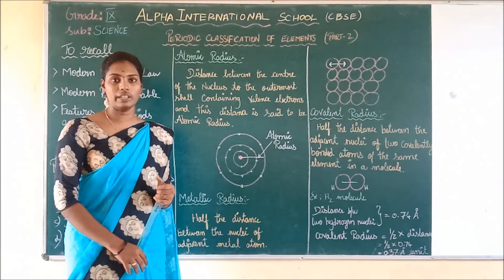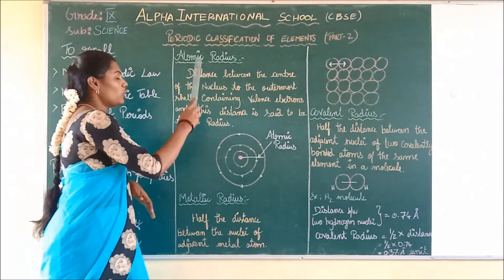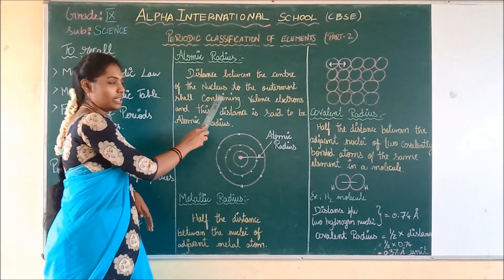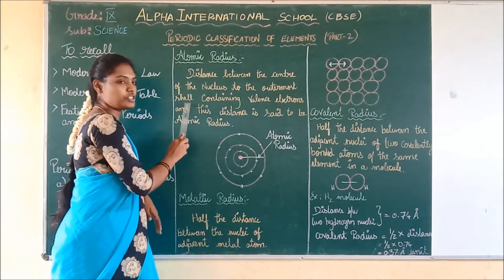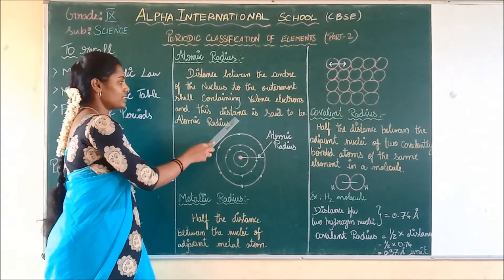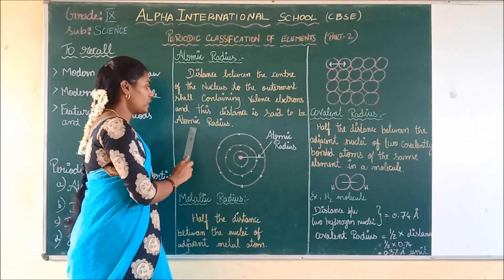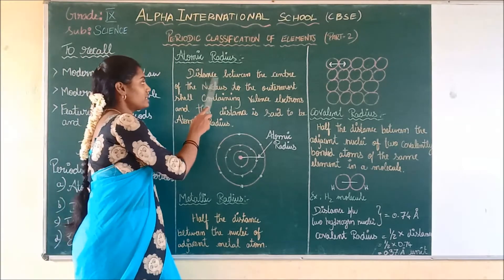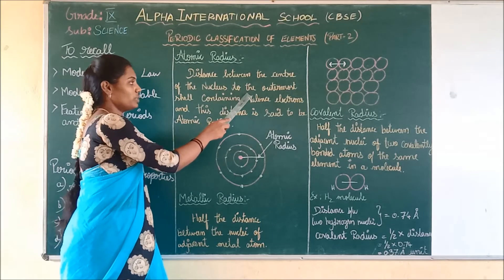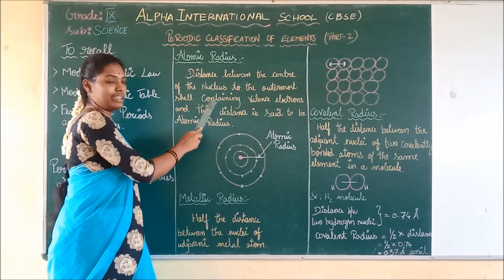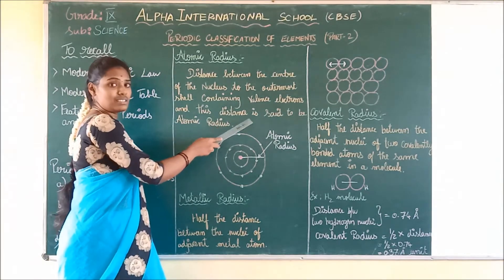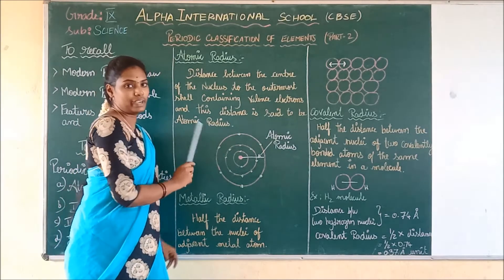What is meant by atomic radius? Atomic radius is the distance between the centre of the nucleus to the outermost shell containing the valence electrons, and this distance is said to be the atomic radius.